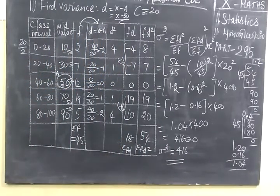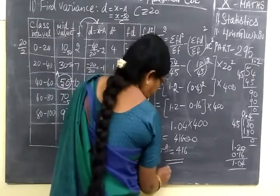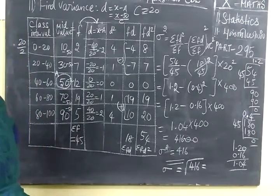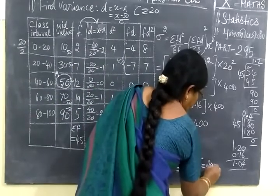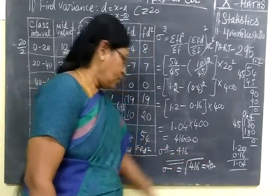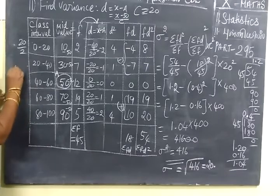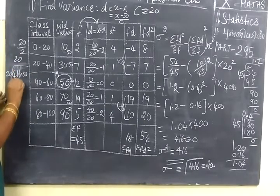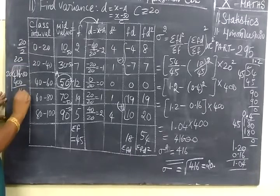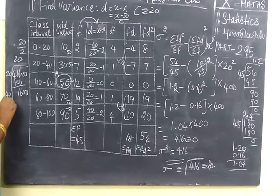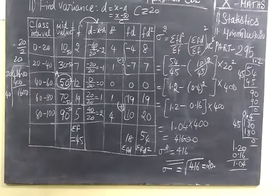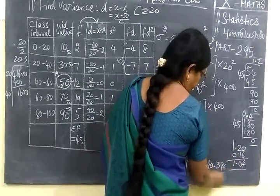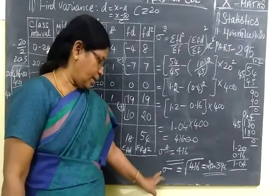Then here standard deviation is equal to root of 416. This is equal to 1.04 into 400. That is equal to 416. So variance is 416, and standard deviation is approximately 20.4. So we found variance and standard deviation.